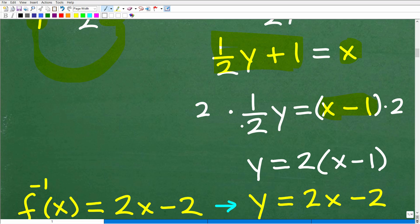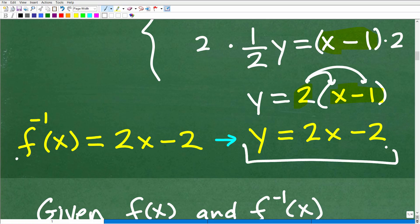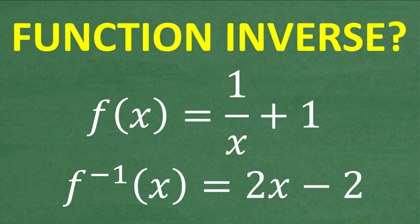A lot of students struggle with functions and inverses because they're struggling with basic algebra. Your skills are not going to improve magically on their own — you have to do something about it. So when we solve for y, y equals 2(x minus 1), and distributing gives 2x minus 2. Using inverse function notation, f⁻¹(x) equals 2x minus 2. That matches the original problem, so yes — that function is correct.